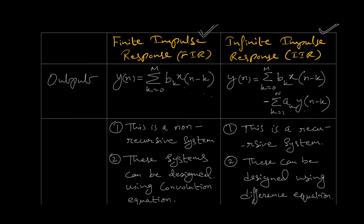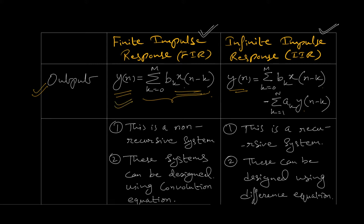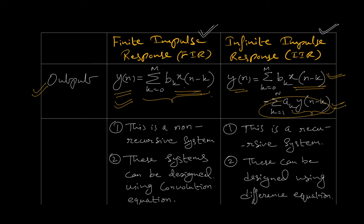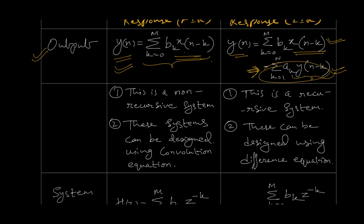The first comparison point is the output, which we generally represent with Y of N. The output of FIR is defined as a weighted sum of past and present input values, meaning the output depends on inputs only. But for IIR filters, it is the weighted sum of past and present input values as well as past output values. Due to this dependence it will have infinite impulse response, and these recursions last forever in theory. This is why FIR systems are non-recursive in nature, but IIR filters are recursive type systems.